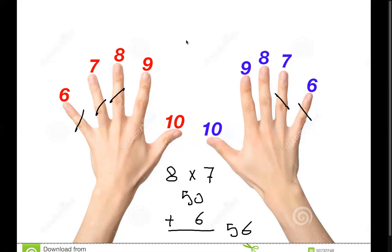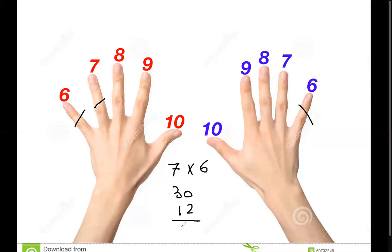Let's do one more. Here's 7 times 6. So close this, close this, up to 7. And here just close 6. Now the closed fingers, count them by 10s. 10, 20, 30. And the open fingers, just multiply them. So you have 3 here, times 4 there, and that's 12. Add these, you get 42. And that's what 7 times 6 is.